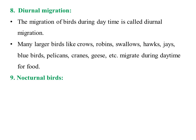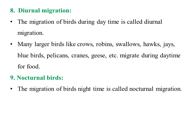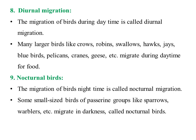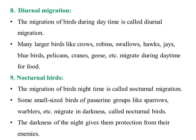In nocturnal migration, birds migrate only during the night time. This type of migration is called nocturnal migration. For example, small-sized birds of the passerine group like sparrows and warblers migrate in the darkness. They need to escape from their enemies, so for protection they migrate only during the night time, by which they protect themselves from their enemies.